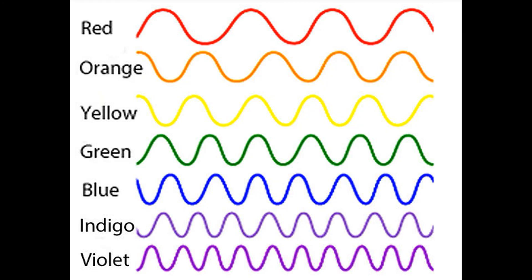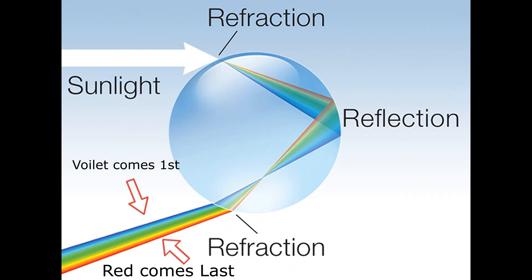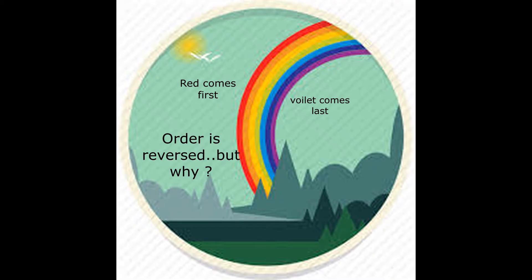Since violet has the shortest wavelength, it bends the most and red bends the least as it has the maximum wavelength. As you can see here, violet comes first and red comes last but if you see in a rainbow, the order is reversed.